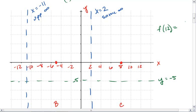When we plug in 12 to our original function, we get negative 2.51. We have the point 12, negative 2.51.